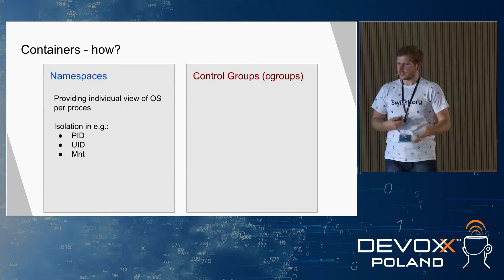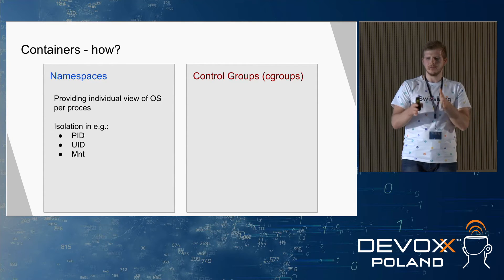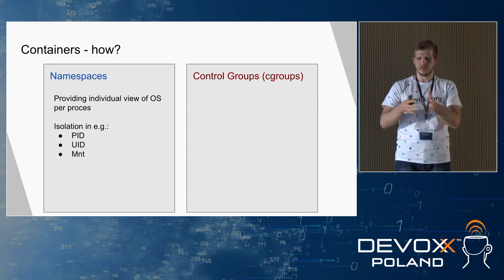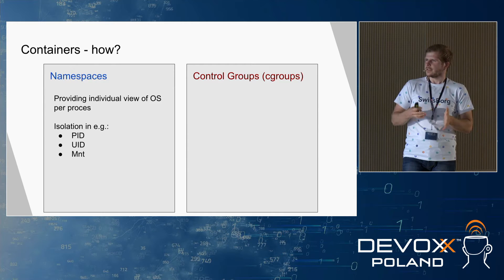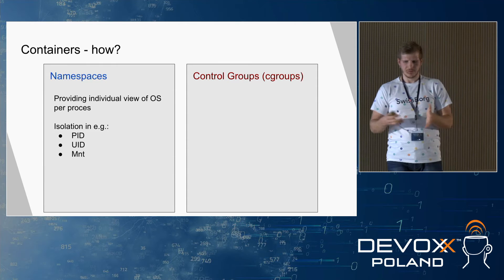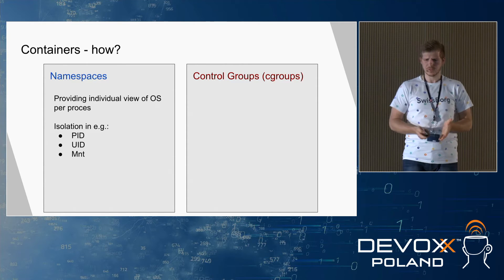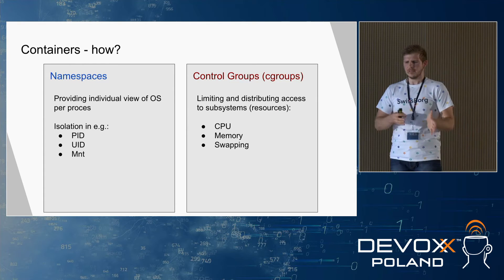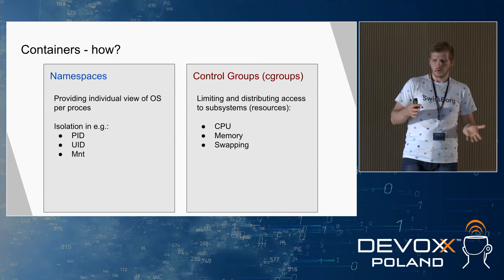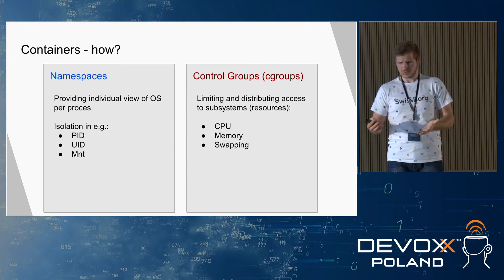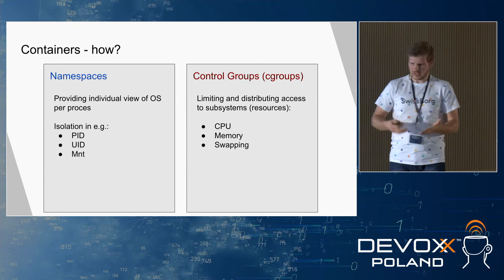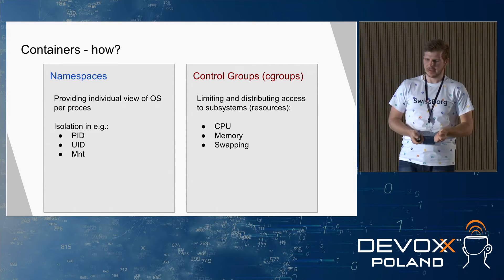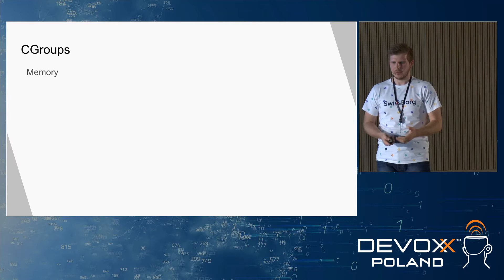Namespaces provide an individual view of the operating system per particular process or process group — a process sees its own space of process IDs, user IDs, mounted devices, and so on. Control groups (cgroups) provide the functionality of limiting and distributing access to subsystems — resources like CPU time, memory, and swapping. This is something we're going to rely on later.